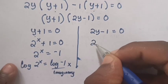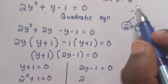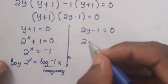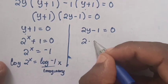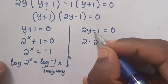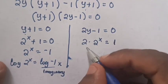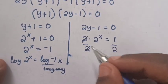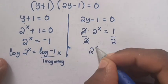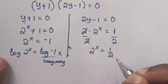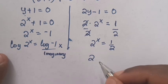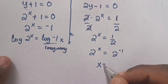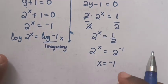For the second case, 2y minus 1 equals 0, so 2 times 2 power x equals 1. Dividing both sides by 2 gives 2 power x equals one half. Since one half equals 2 power negative 1, comparing both sides gives x equals negative 1.